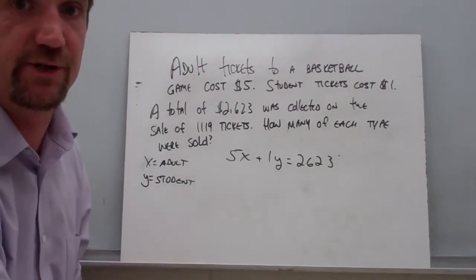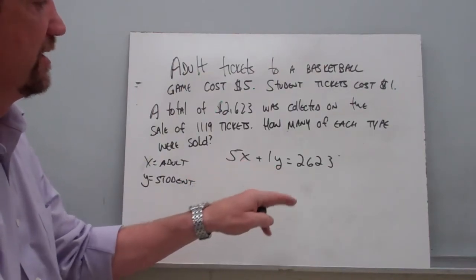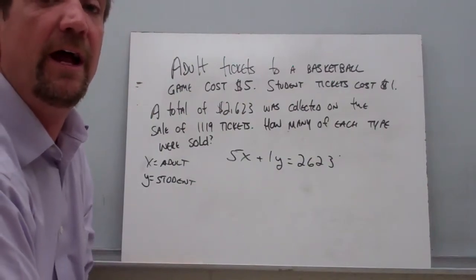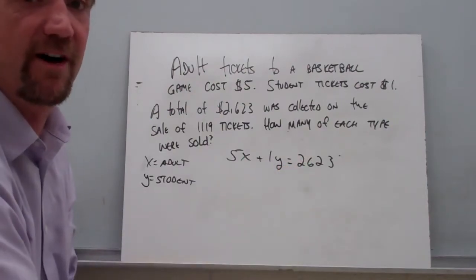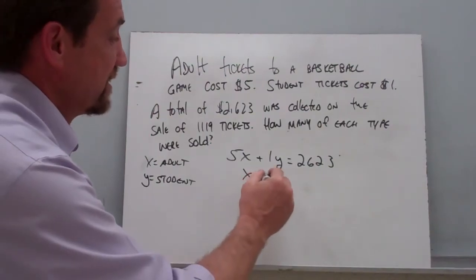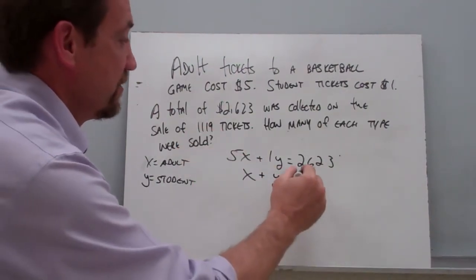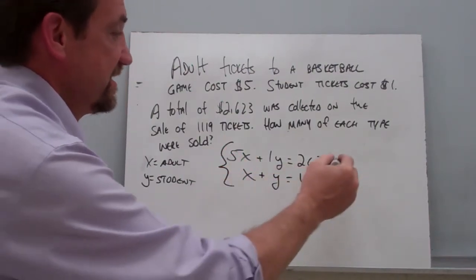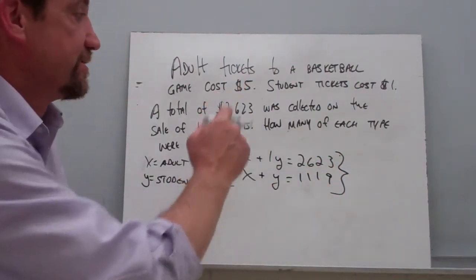So there's the first equation: $5 per adult ticket plus $1 per student ticket gives us a total of $2,623. The other equation talks about the number of tickets — not the money involved, but the number of tickets. If I took all of the adult tickets plus all of the student tickets, I would have sold a total of 1,119 tickets. Now we have a system of equations to solve this problem.